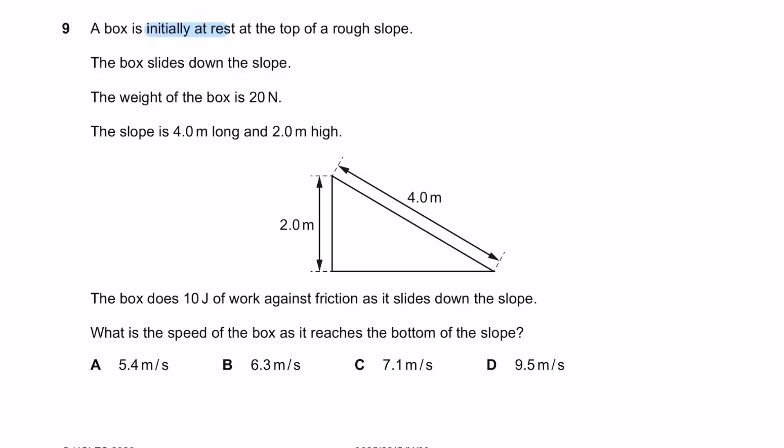Question 9. A box is initially at rest at the top of a rough slope. The box slides down the slope. The weight of the box is 20 newtons. The slope is 4 meters long and 2 meter high. The box does 10 joules of work against friction as it slides down the slope. What is the speed of the box as it reaches the bottom of the slope? Alright, first let's list down all the information that we have from this question. Initially at rest means that the value of U is equal to 0. The weight of the box is 20 newtons, meaning that W equals to M times G equals to 20 newtons. The slope is 4 meter long and 2 meter high. The box does 10 joules of work. So the value of work, which can also be defined as force times distance or the change of energy, is 10 joules. And we are looking to find the speed of the box.